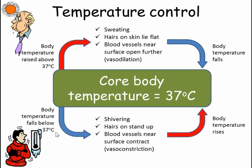In contrast, if body temperature falls below 37 degrees C, then the body reacts by producing more heat itself by shivering, where friction in the muscles produces heat, and by trying to prevent as much heat loss as possible by having the hairs on the skin stick up and the blood vessels vasoconstrict, so that less warm blood is moved to the surface of the skin.